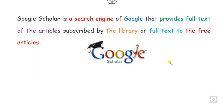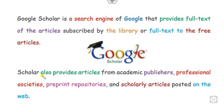First of all, what is Google Scholar? As all of you know, Google Scholar is a search engine by Google which provides the full text of articles that are subscribed by a library, or articles that are free of cost. Free articles means they are either open access articles or the researcher may put their copies on various social media platforms. Google Scholar also provides articles from academic publishers, professional societies, as well as pre-prints stored in arXiv, ResearchGate, and many more.